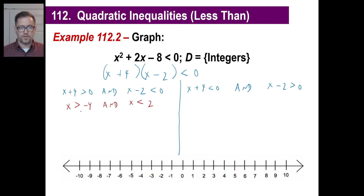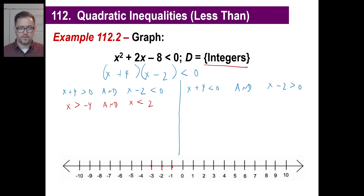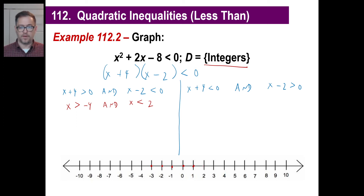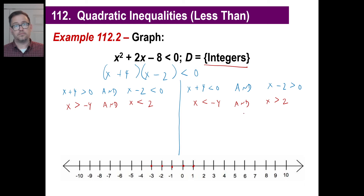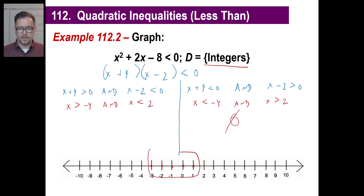Can you think of numbers greater than negative four and less than two? Yes — we're allowed to use integers. Greater than negative four: negative three, negative two, negative one, zero — and less than two, so it cannot include two. That's your solution for Case 1. Case 2 gives x less than negative four AND x greater than two — and there are no such numbers. So your answer lies in Case 1.